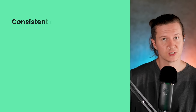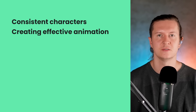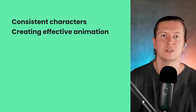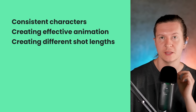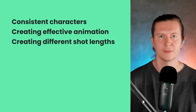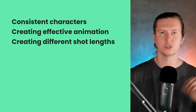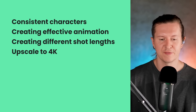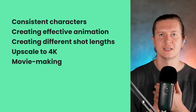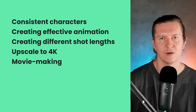In this video we're going to break down exactly how to create consistent characters with AI video. We'll move on to see how we can animate those effectively within the limitations of the technology. Then we'll look at creating different shot lengths with the same characters — going from a close-up to a medium shot to a wide angle shot. Finally, we'll look at upscaling to 4K definition and putting all our shots together to create a story.